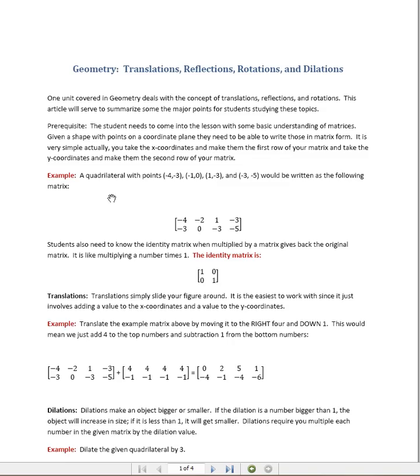In order to begin, we first need to review a couple of points. We need to be able to take coordinates off of the coordinate plane system and write that as a matrix. If you can see here, we have a quadrilateral with points (-4, -3), (-1, 0), (1, -3), and (-3, 5).